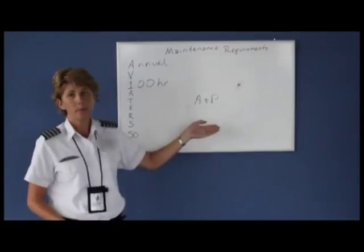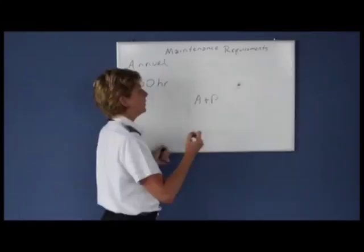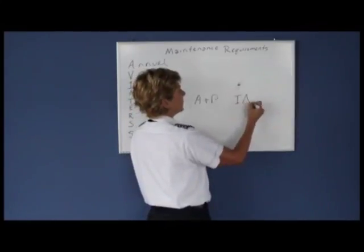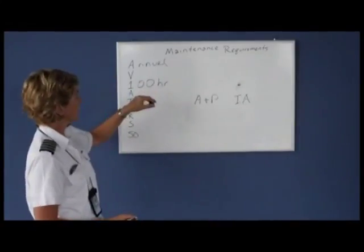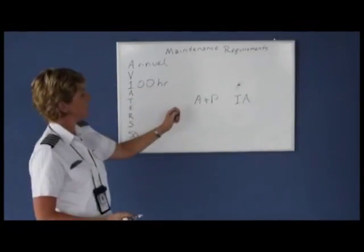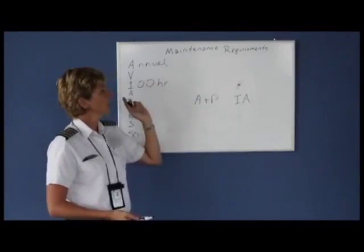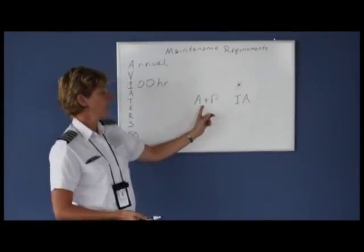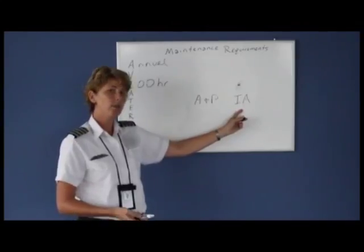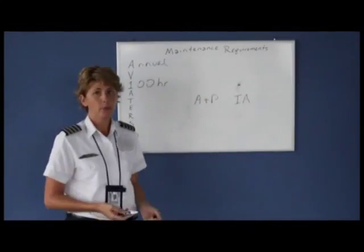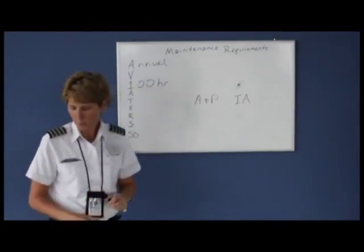Once a person has been an A&P mechanic for at least two years, they're allowed to test up to the higher level. That higher level authorizes them to be an IA, which stands for Inspector Authorized. The 100-hour inspection may be performed and signed off by an A&P, but the annual inspection has to be signed off by an IA. The A&P may have performed the work, but it must have occurred under an IA's authority — so the only real difference between the two inspections is who actually signs off the work.